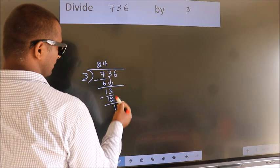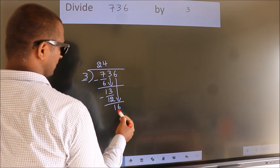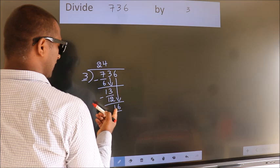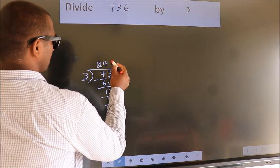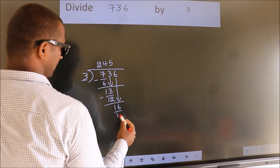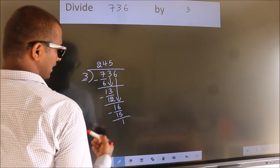After this bring down the beside number. So 6 down, so 16. A number close to 16 in 3 table is 3 5's 15. Now we subtract. We get 1.